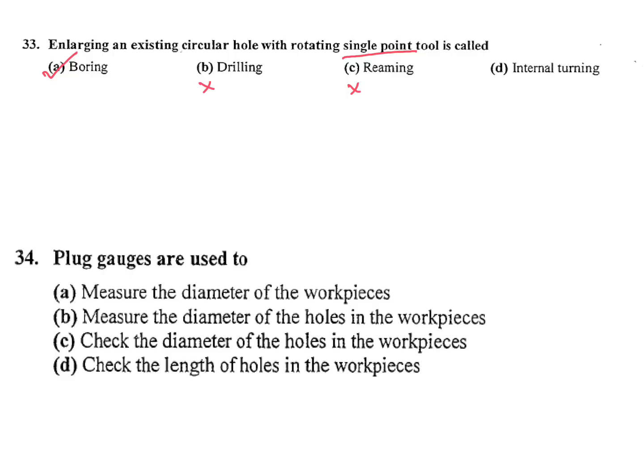Next question: Plug gauges are used to a) Measure the diameter of workpiece, b) Measure the diameter of holes in the workpiece. See one thing is important: gauges are not for measurement, only it will check the dimension whether it is acceptable or not acceptable, yes or no criteria. So a and b are not possible. c) Check the diameter of the holes in the workpiece. This is the answer.